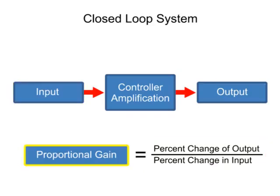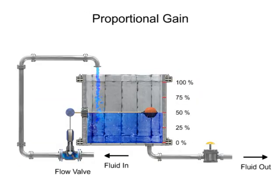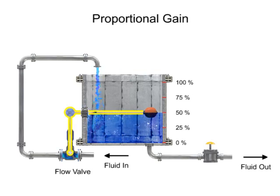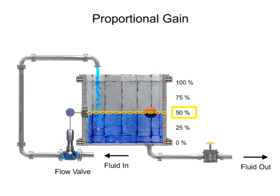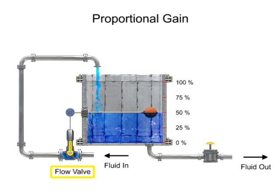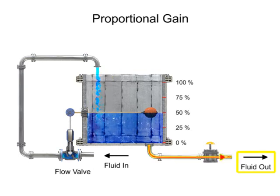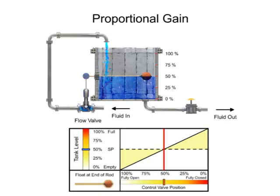To illustrate the concept of gain, a common process of regulating the level of fluid in a tank with a float attached to a control valve is used. The float mechanism is designed so that when the tank level is half-full, the flow valve is open to the position that causes the amount of fluid entering the tank to equal the amount leaving. The float on the end of the rod is positioned to meet the minimum and maximum flow capability of the valve.